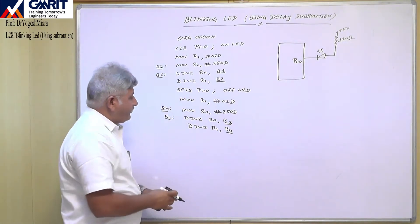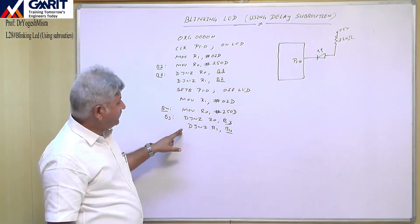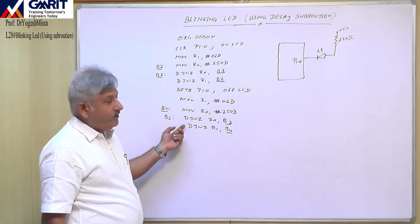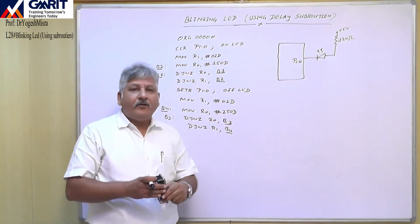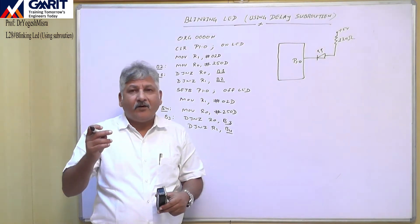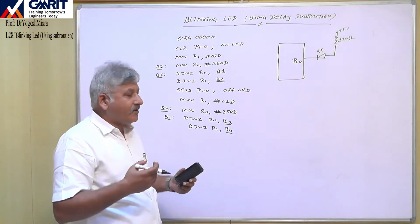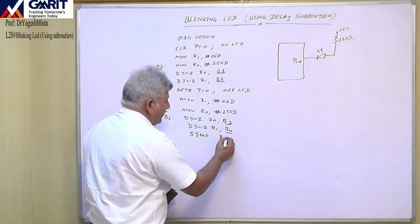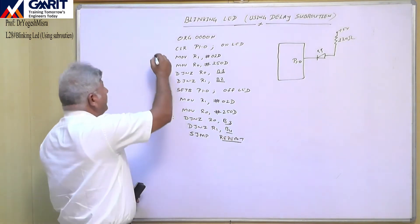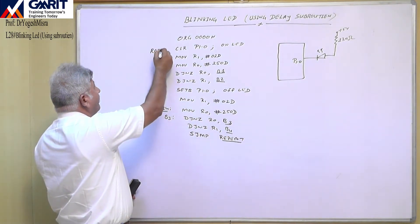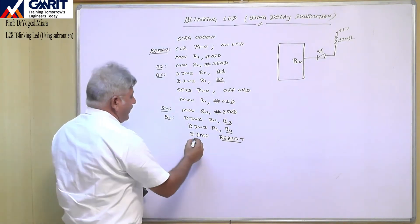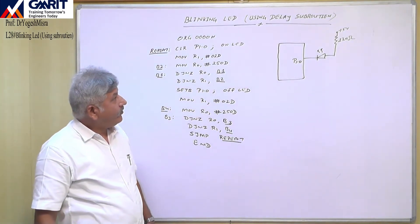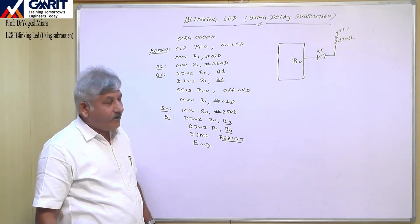These four instructions will again generate a delay of one millisecond. So from the start of our program the LED will be on for one millisecond and then off for one millisecond. To repeat this operation continuously, we write SJMP with a label 'repeat' pointing back to the start. This program will toggle our LED with one millisecond on and one millisecond off period.